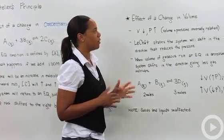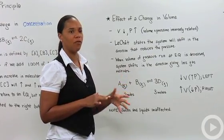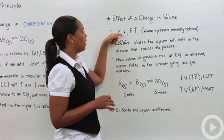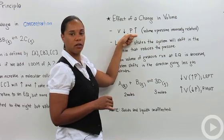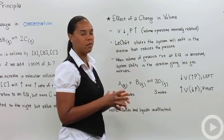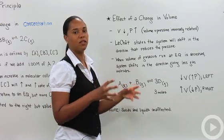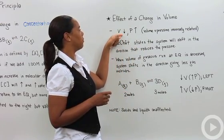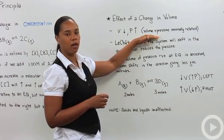So let's talk about the effect of a change in volume. So first let's recall from understanding gas laws that if you have a decrease in volume, that's going to increase your pressure, right? So you change the spatial dimensions, it gets smaller, you have the same number of molecules present, so the pressure will increase. So conversely, if the volume goes up, then the pressure will decrease. So remember that volume and pressure are inversely related.